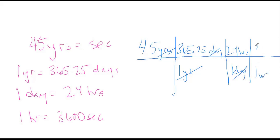One hour, 3600 seconds. So we take 45 times 365.25 times 24 times 3600.